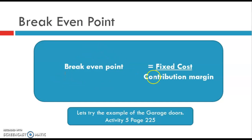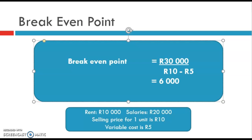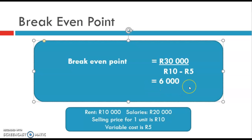The break-even point equals your fixed cost — rent, insurance, salaries — divided by your contribution margin. Using a basic example: rent is 10,000 Rand, salaries are 20,000 Rand, selling price per unit is 10 Rand, and variable cost to make one unit is 5 Rand. Fixed cost is 10,000 plus 20,000 = 30,000 Rand. Contribution margin is 10 Rand minus 5 Rand = 5 Rand. So 30,000 divided by 5 = 6,000 units. You must make and sell 6,000 units before making a profit. Only from unit 6,001 onward do you earn a profit of 5 Rand per unit.